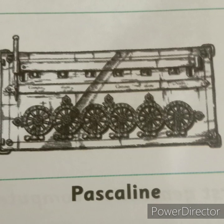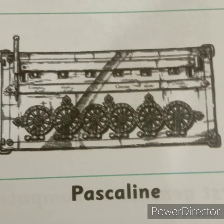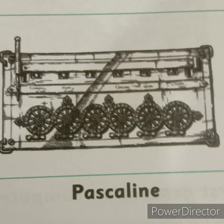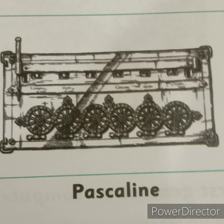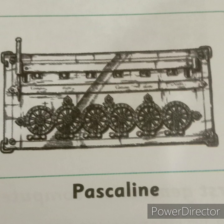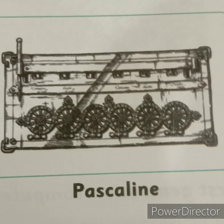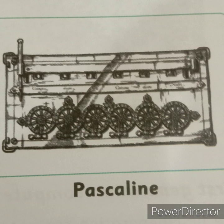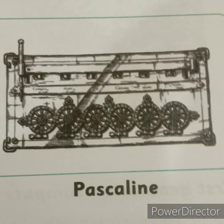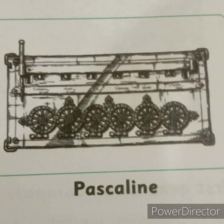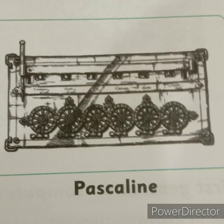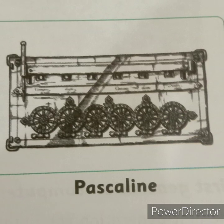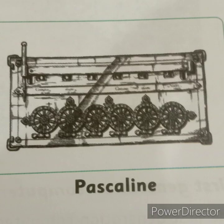It could do multiplication only by repeated addition, and division by repeated subtractions. To sum up, Pascal Lyon was used to perform addition, subtraction, multiplication and division. It could calculate numbers up to 9,99,99,999.